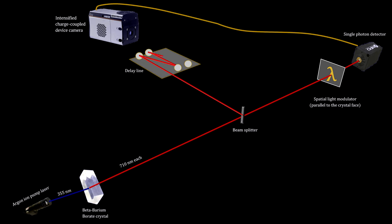There is a delay loop in the photon's path to ensure that it enters the camera at exactly the same time that its entangled counterpart's signal reaches the camera, if indeed it did pass through the modulator.